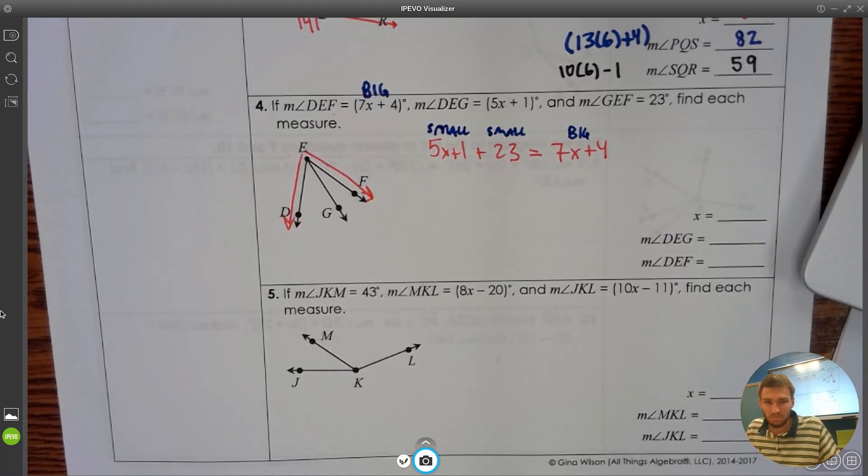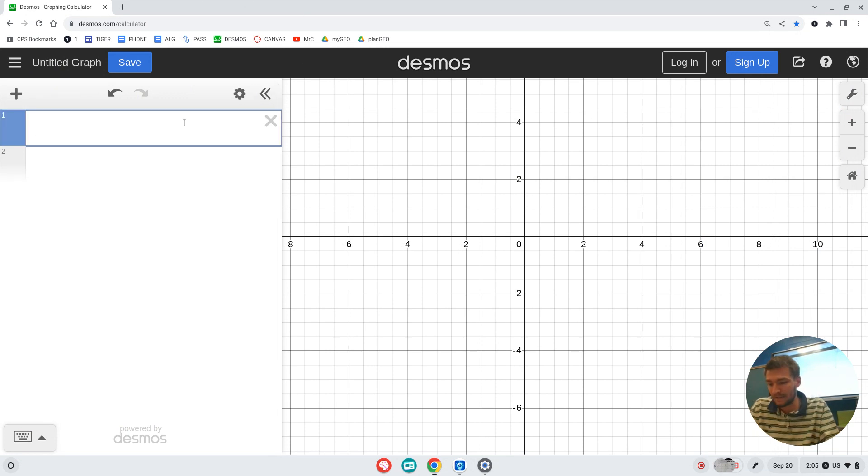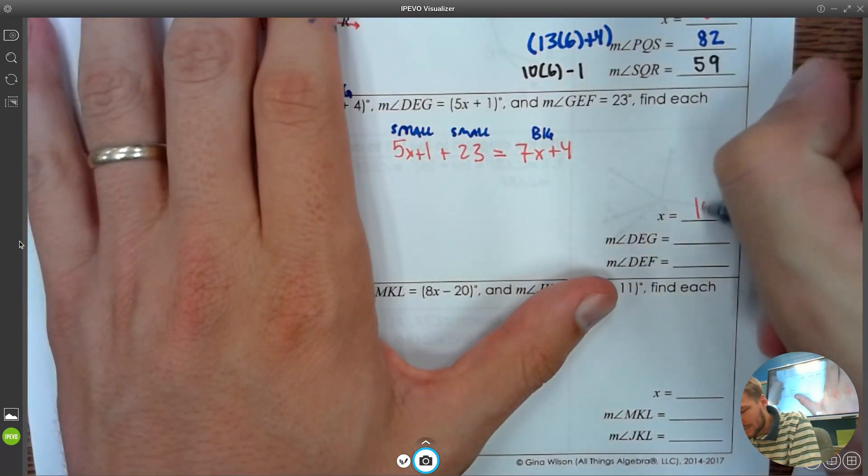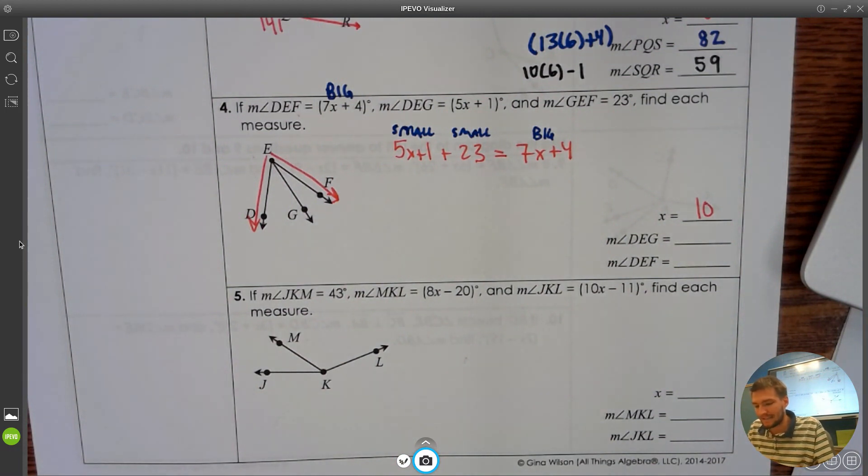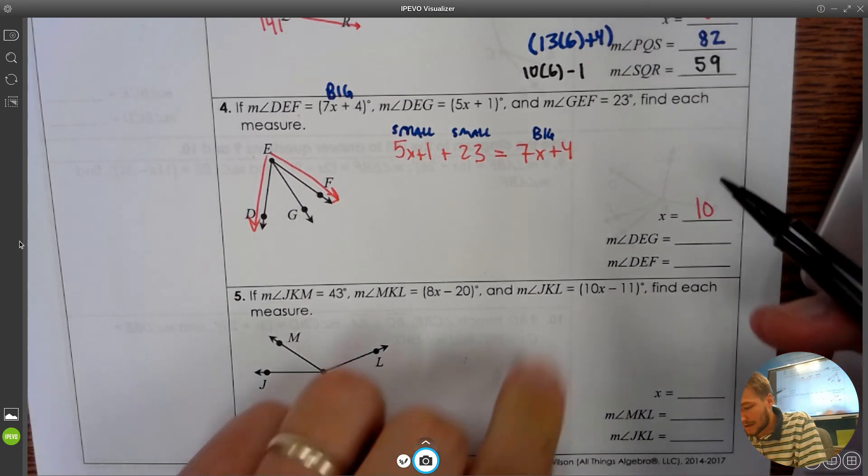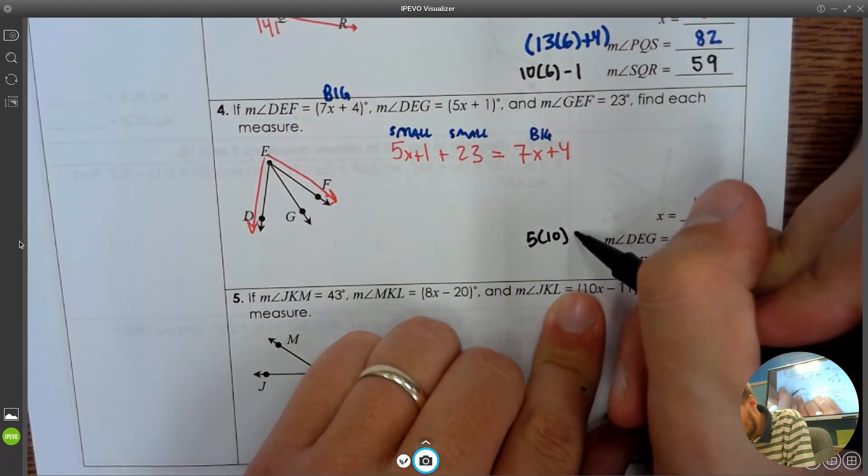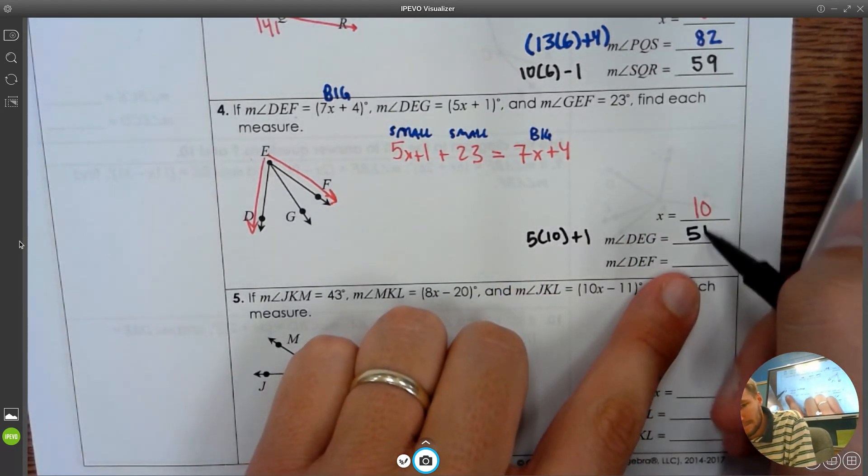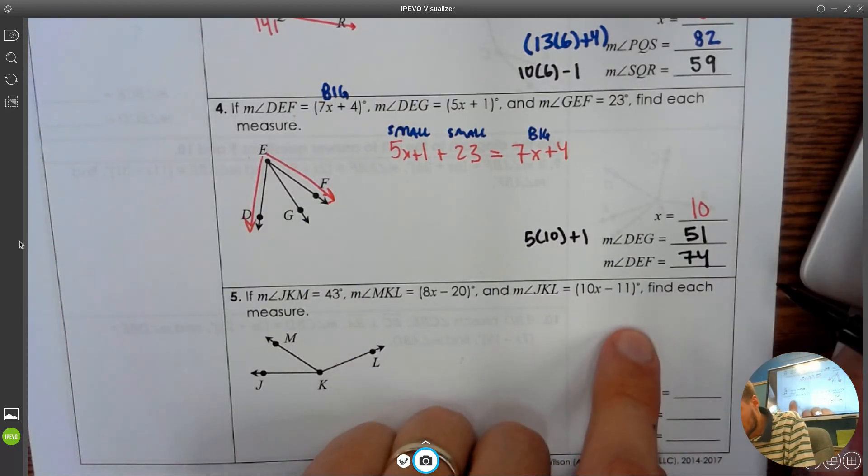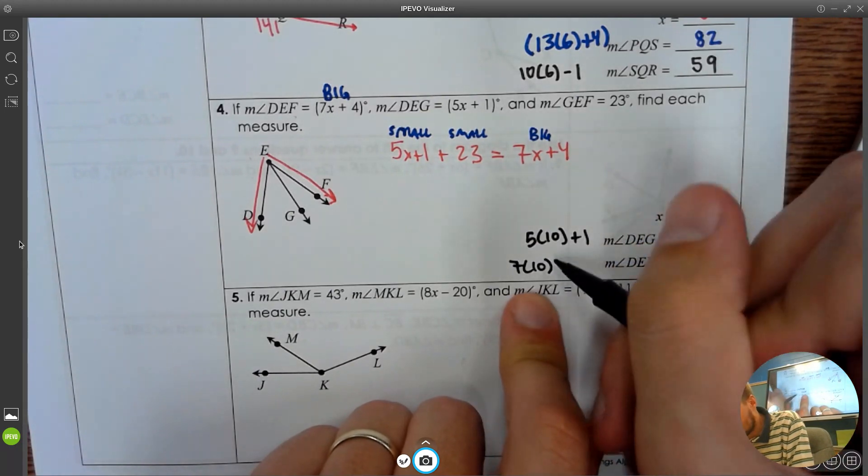We go to Desmos. We solve it. We type carefully. 5x plus 1 plus 23 equals 7x plus 4. I see that 10 is an answer I'm getting. And that 10 is going to be my X value. So I can put X equals 10. Measure of DEG should be 5 times 10 plus 1, that's 51. And I heard 74. Let's double check that. 7 times 10 is 70 plus 4 is 74.